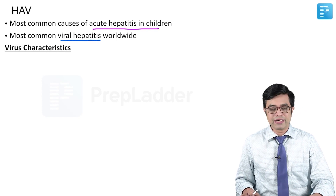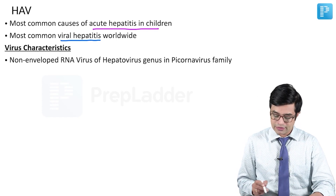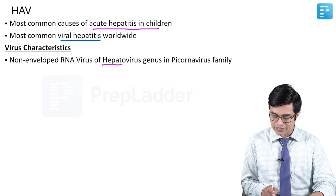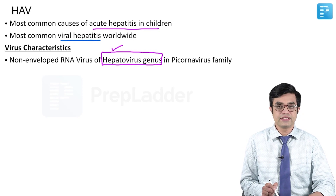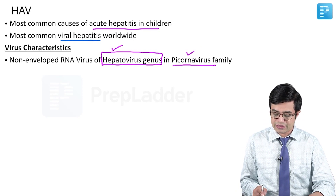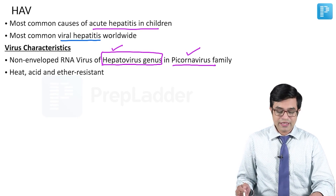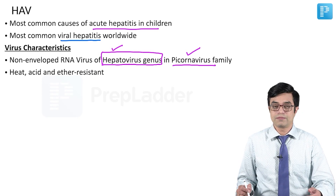What are the virus characteristics? It is a non-enveloped RNA virus which belongs to a separate genus called Hepatovirus genus, which belongs to the Picornaviridae family. So it is a Picornavirus family member. It is a heat resistant, acid resistant, and ether resistant virus.